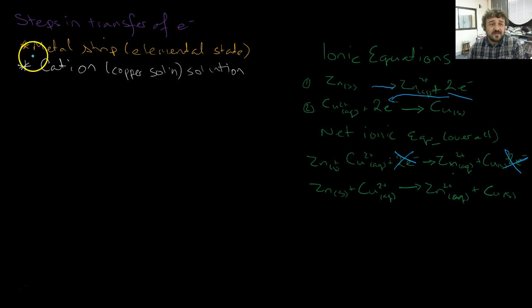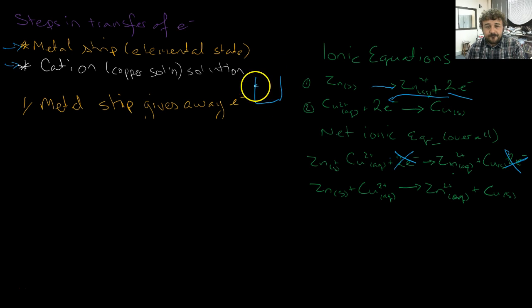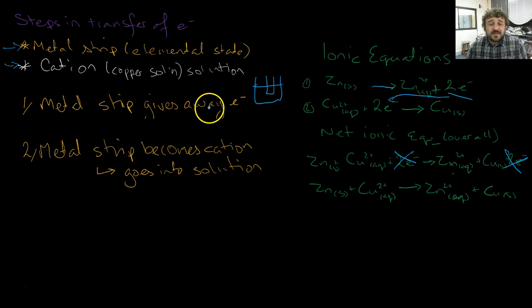Now let's just summarize these in the steps. So if we're writing it in yellow, it's going to be about the metal strip. If we're writing it in white, it's going to be the cation solution. The metal strip is the elemental state. So the first thing that you've put in the solution, here's your solution, there's your metal strip that's gone in. The metal strip gives away electrons. This means the metal strip itself has become a cation, and then the ions, the cations, go into solution. So they leave off and they go into solution.